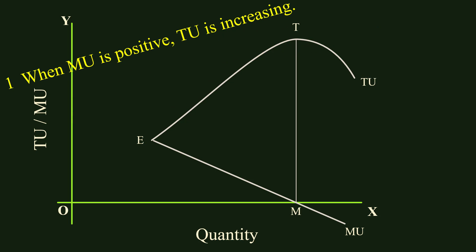First relation: when Marginal Utility is positive, Total Utility is increasing. In the segment EM of the Marginal Utility curve, Marginal Utility is positive. In the corresponding segment ET of the Total Utility curve, Total Utility is increasing.